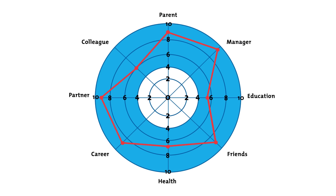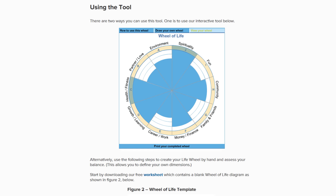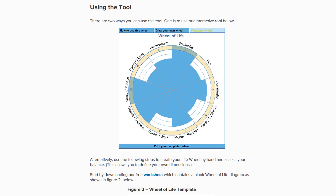The Wheel of Life is a picture of your life as it is now, and as you'd like it to be. Each area of your life is one spoke of the wheel. You can use the interactive tool on our website to create a wheel, or draw one yourself.